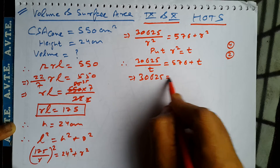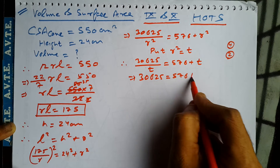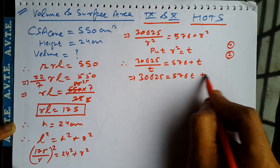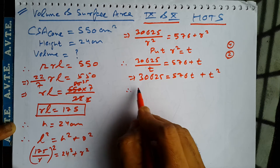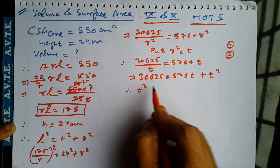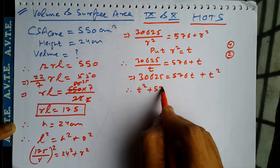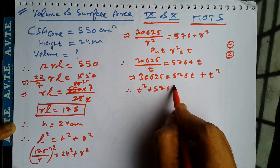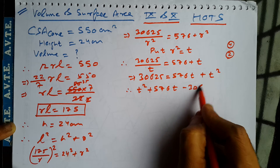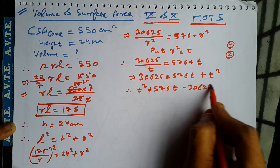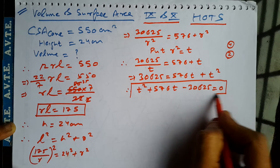So 30625 is equal to 576T plus T square. Rearranging: T square plus 576T minus 30625 equal to 0. It's a quadratic equation.